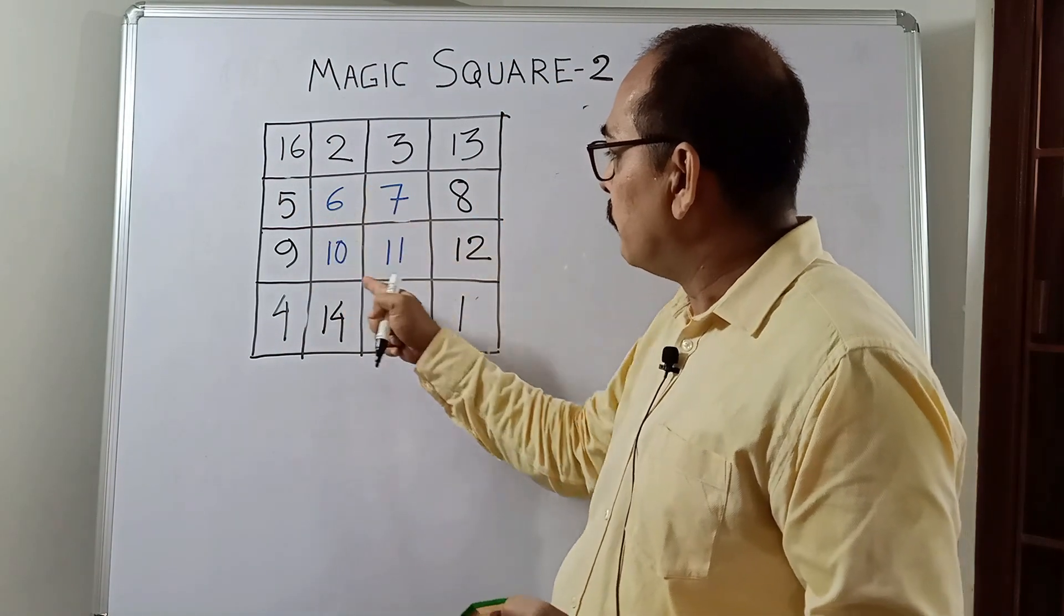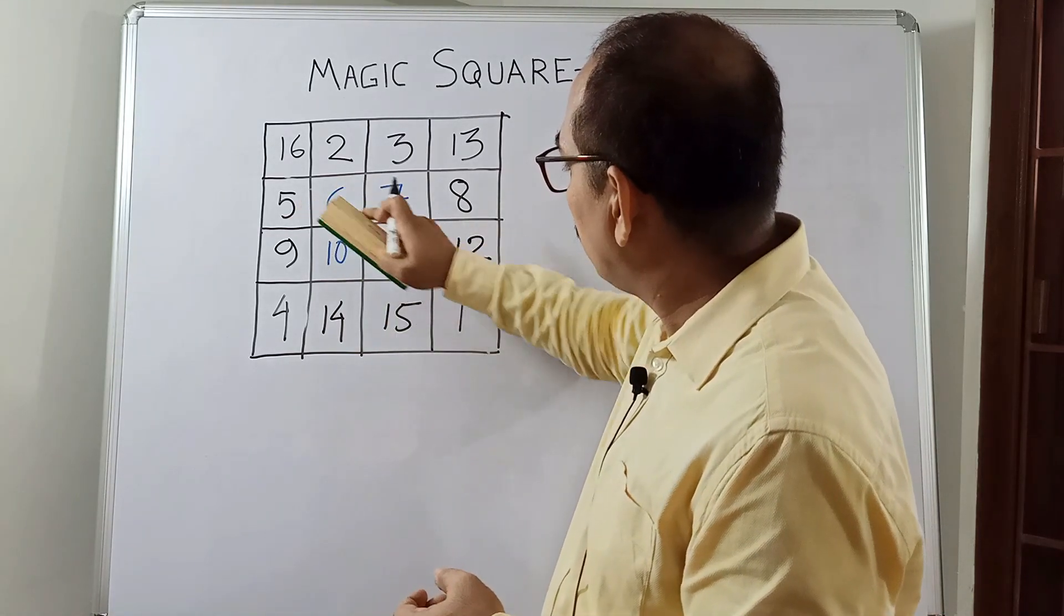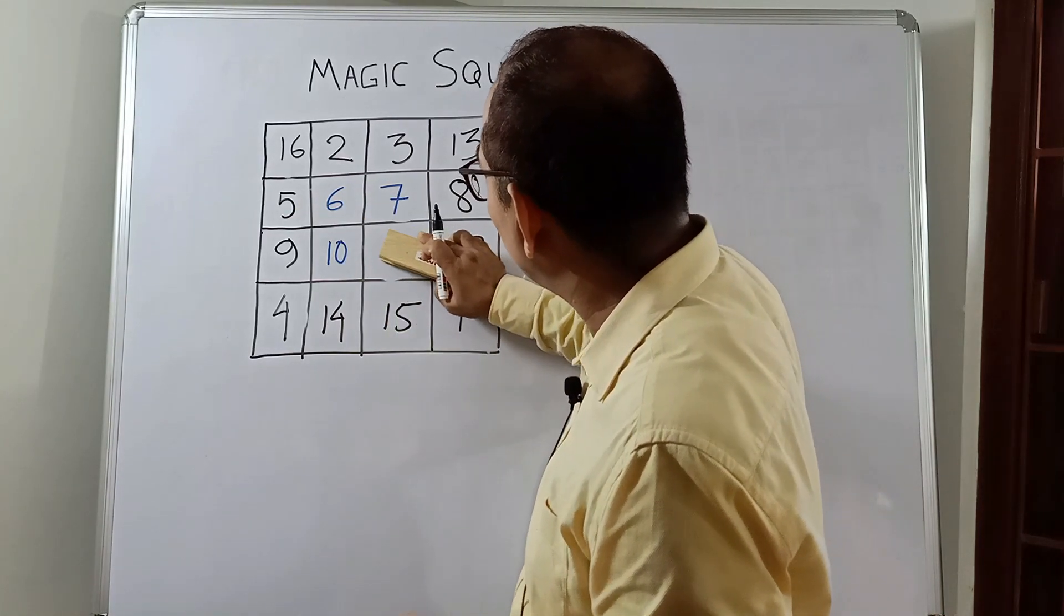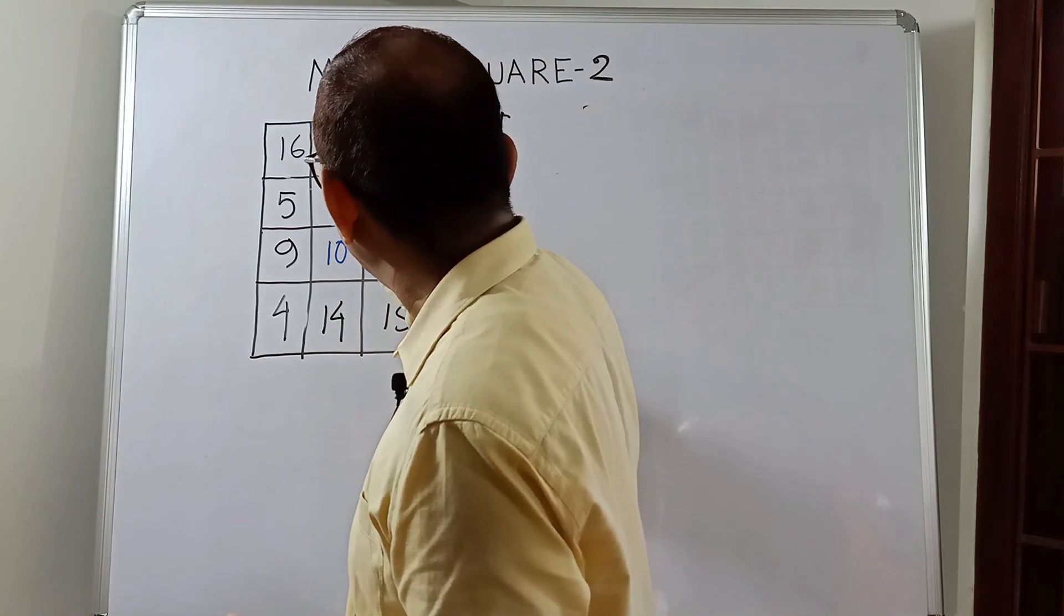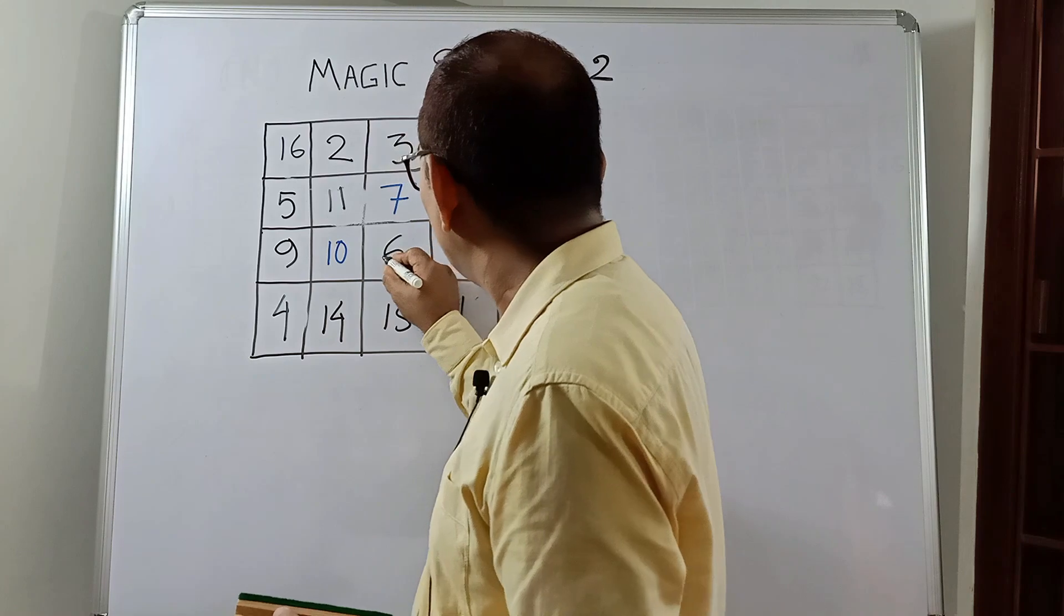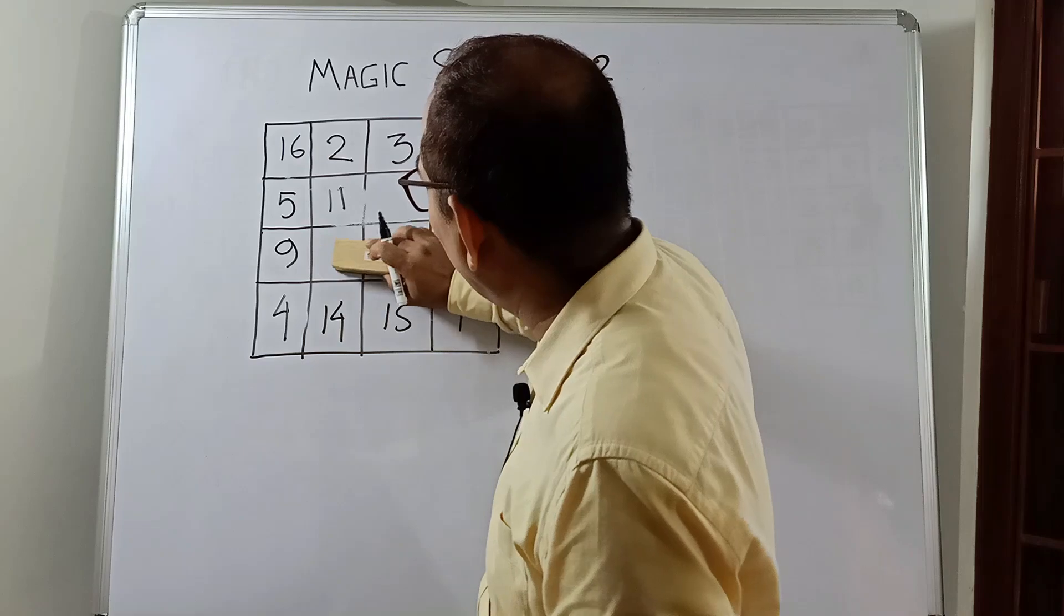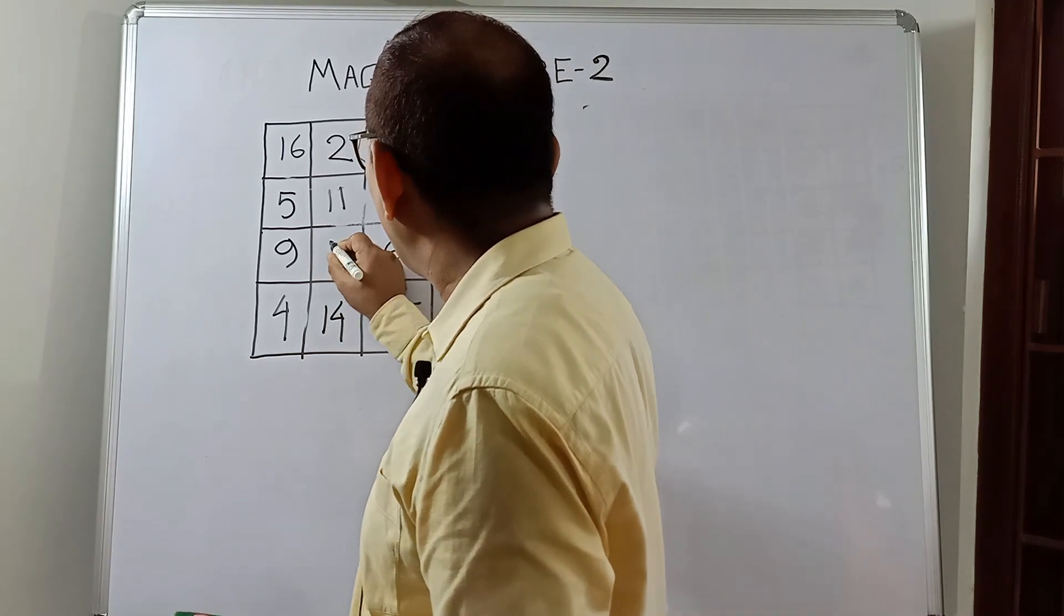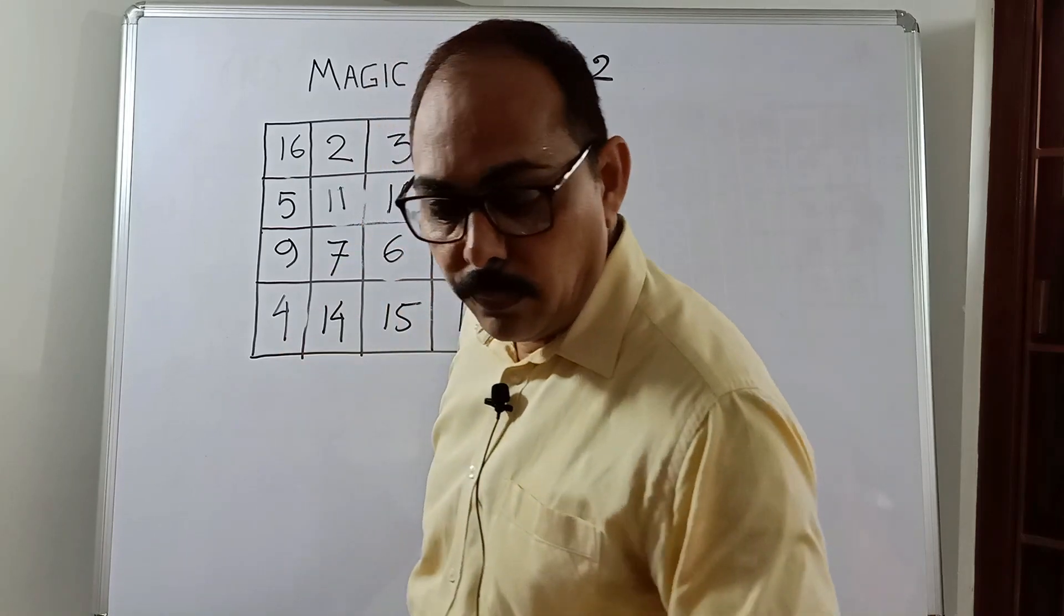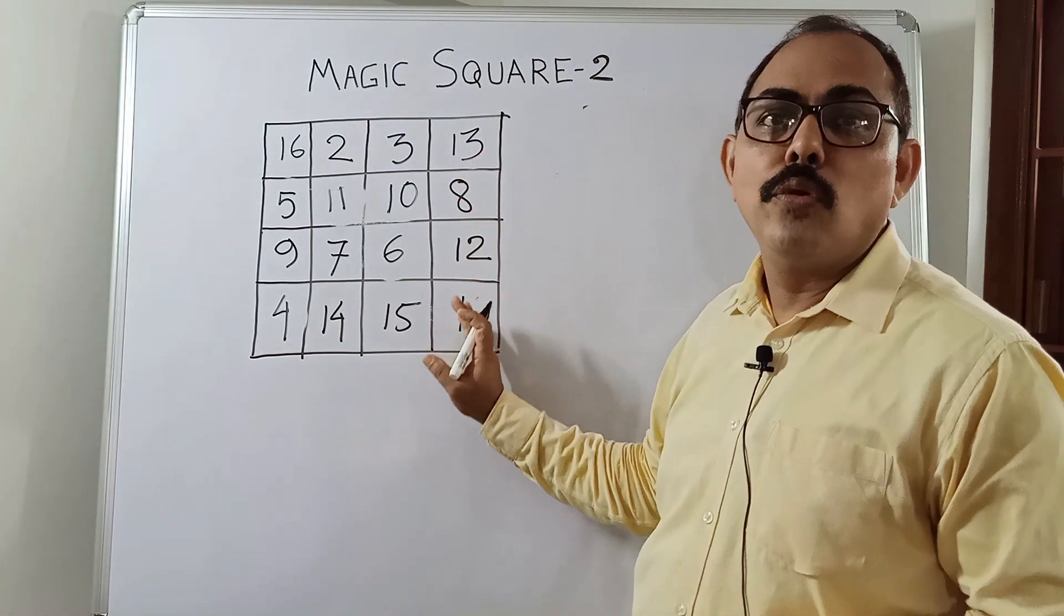What will happen with these numbers? The same thing. We will interchange 6 and 11. We will write 11 here and 6 here. And same for 7 and 10. We will write 10 here and 7 here. This simple method, you can make a magic square of 4 by 4.